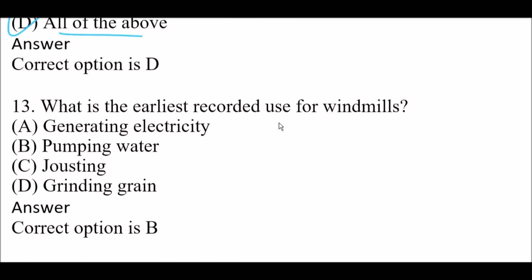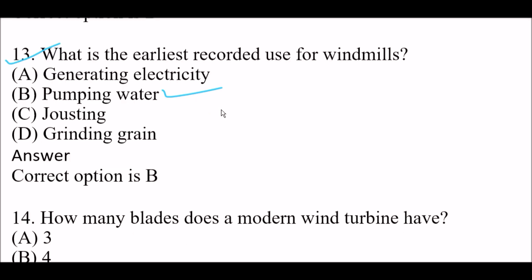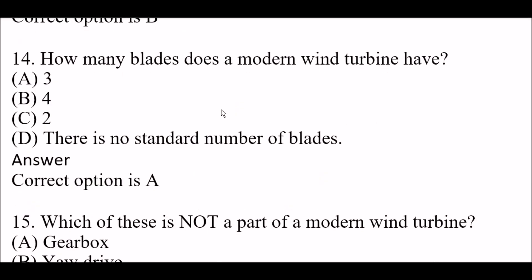Next question: what is the earliest recorded use for windmills? Option A: generating electricity. Option B: pumping water. Option C: joisting. Option D: grinding grain. Right answer is Option B — pumping water. Next question: how many blades does a modern wind turbine have? Option A: 3. Option B: 4. Option C: 2. Option D: there is no standard number. Right answer is Option A — 3.